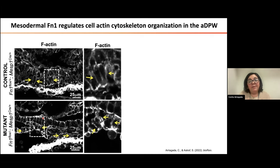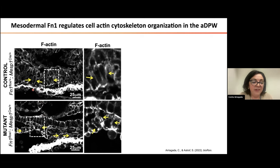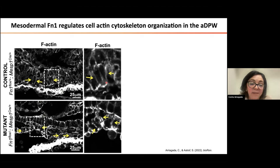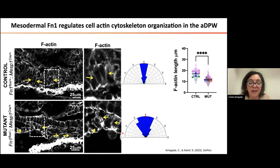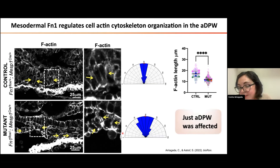Then we looked at the actin cytoskeleton to try to explain these phenotypes. In transversal section, you can see the second heart field cells here at the bottom. The actin filaments are more elongated in controls than in mutants — in mutants they are larger and more disorganized. This corroborates the epithelial defect in the second heart field, and again it only occurs in the anterior dorsal pericardial wall.